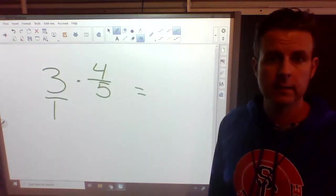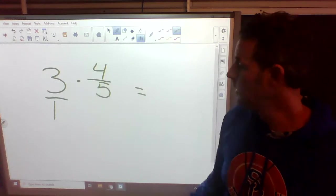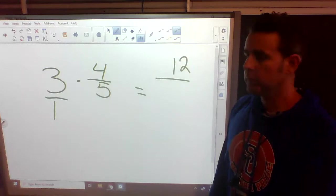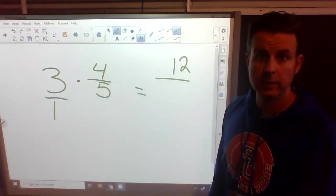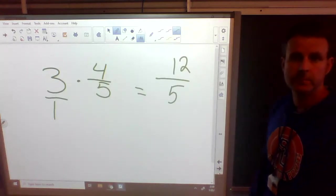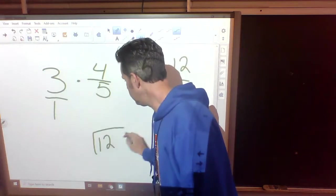So now we multiply. How do we multiply? Top times the top. Bottom times the bottom. What's 3 times 4? 12. What's 1 times 5? Bottom times the bottom. 1 times 5 is 5. What's wrong with 12 fifths? It's improper. It's top heavy.